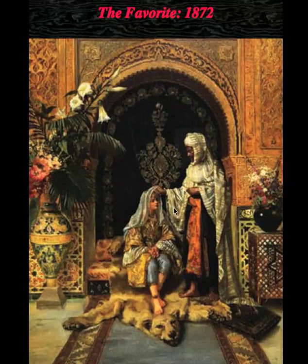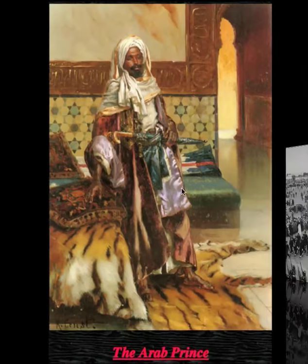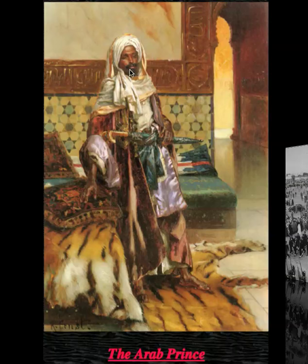The Favorite — there is the Caucasian, who is a member of the harem of this particular Black Moorish chieftain. Clearly, this man is Negro, but Eurocentrists want to make him Caucasian. As well as this one here — the Arab Prince — that is what this painting is called.